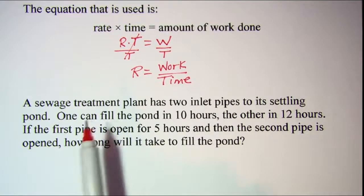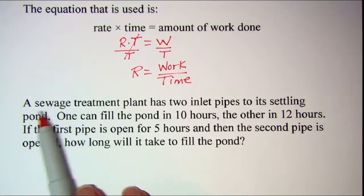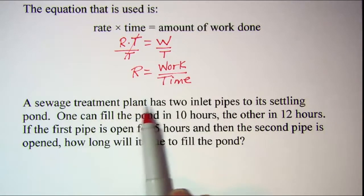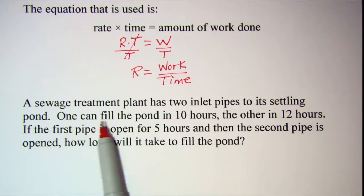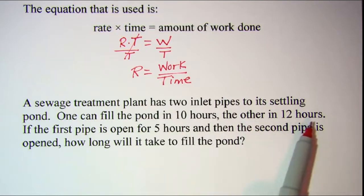The problem that we'll be looking at is a sewage treatment plant has two inlet pipes to its settling pond. One can fill the pond in 10 hours, the other in 12 hours. If the first pipe is open for 5 hours, and then the second pipe is opened, how long will it take to fill the pond?